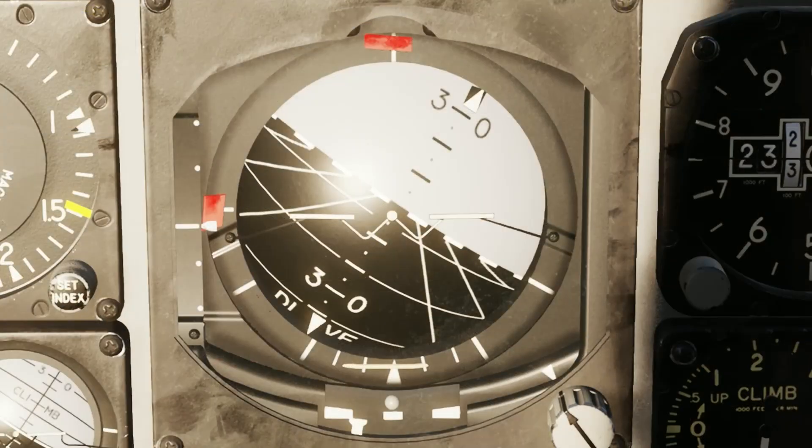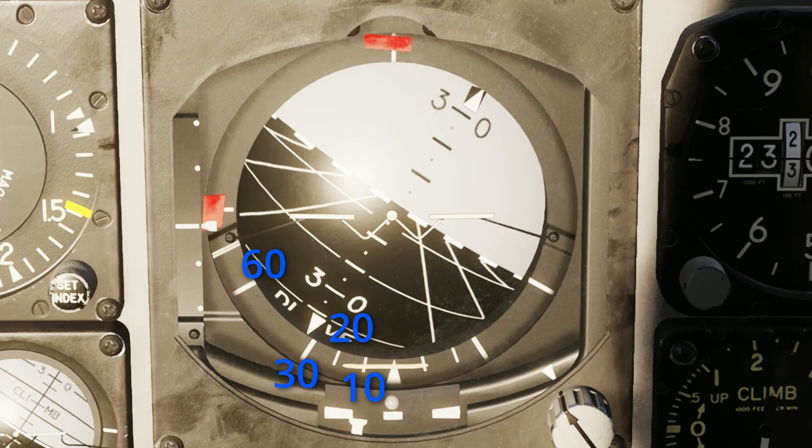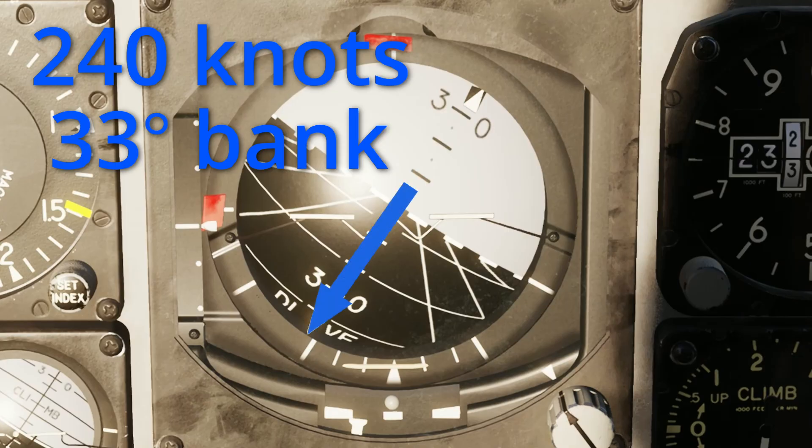But let's say you're flying an aircraft that doesn't have this instrument. You can use these marks on the ADI instead. The marks represent 10, 20, 30, and 60 degrees of bank. So if we were doing 240 knots, we would need 33 degrees of bank for our standard rate turn, which would be just past the 30 degree mark.